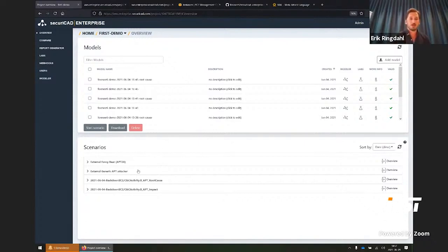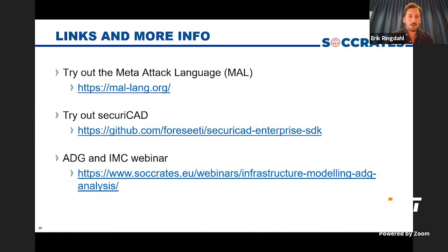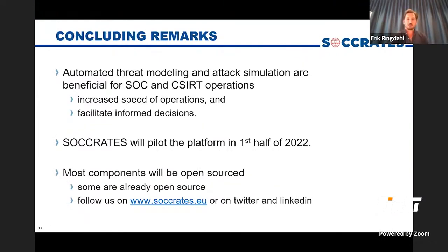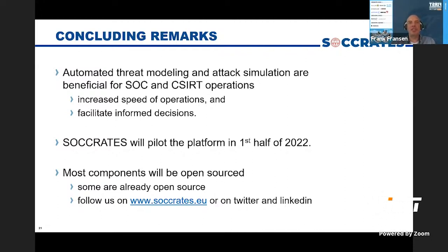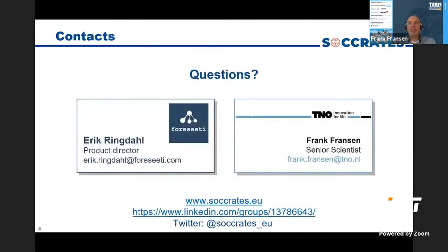We can also have different types of attacker profiles — like how APT 28 would behave or how some other types of APT would behave — based on the threat intelligence that we get. Frank has some concluding remarks. We think this can be beneficial for SOC and CSIRT operations to increase speed of operations and facilitate informed decision-making. The Socrates platform will pilot in the first half of 2022, and at the end of that we will have a demo pilot where we have an event problem. Most of the components will be open source — some of them are already open source — and you can follow us on the Socrates website and we are on Twitter and LinkedIn. Hopefully next year we have a demo where we can show the whole platform.